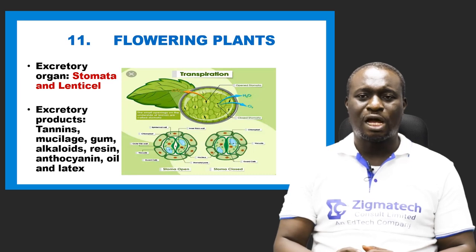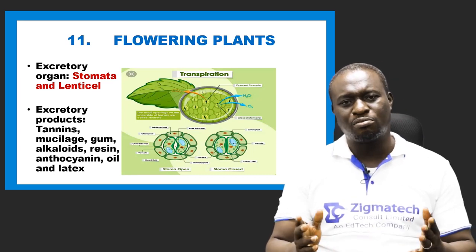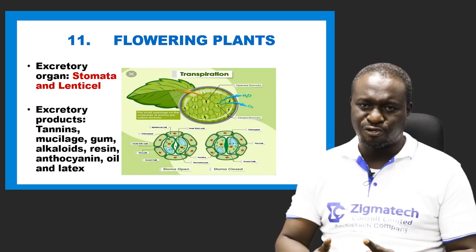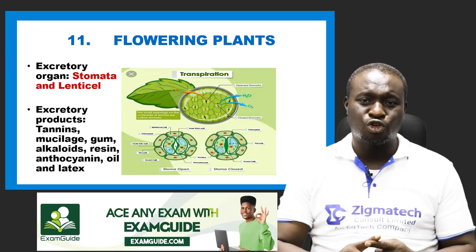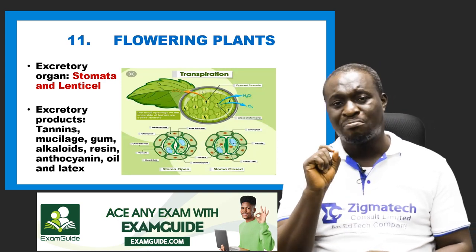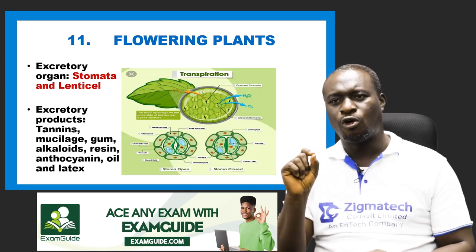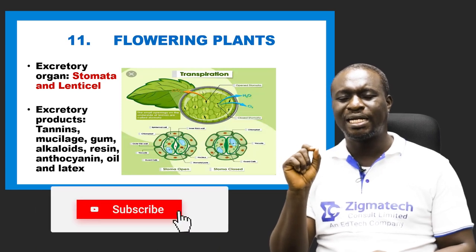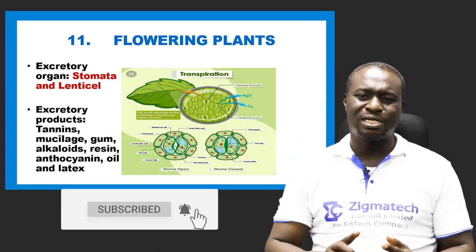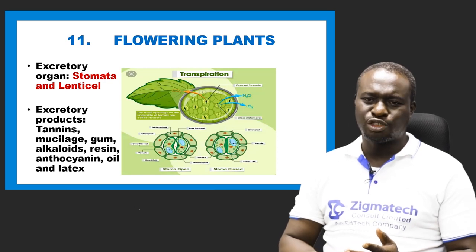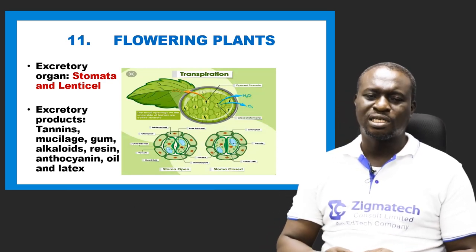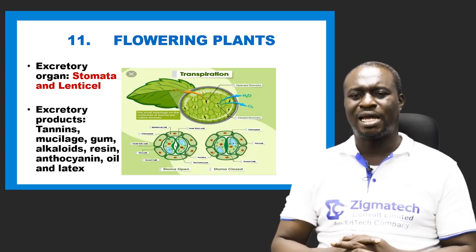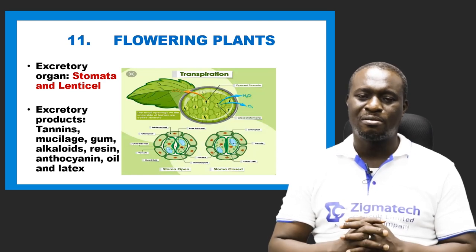Finally, we have the excretory system of flowering plants. Plants do not have specific organs for excretion; they use stomata and lenticels. Their excretory products include tannins, mucilage, gum alkaloids, resins, oils, and latex. These are some of the excretory waste products of flowering plants.